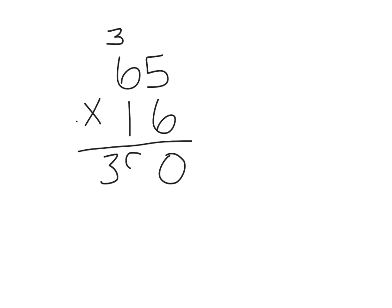Now with multiplication you need a placeholder, so we put a zero here on the next line. And if we had a third line there would be two zeros. Then we multiply everything by 1, so 5 times 1 is 5 and 6 times 1 is 6.